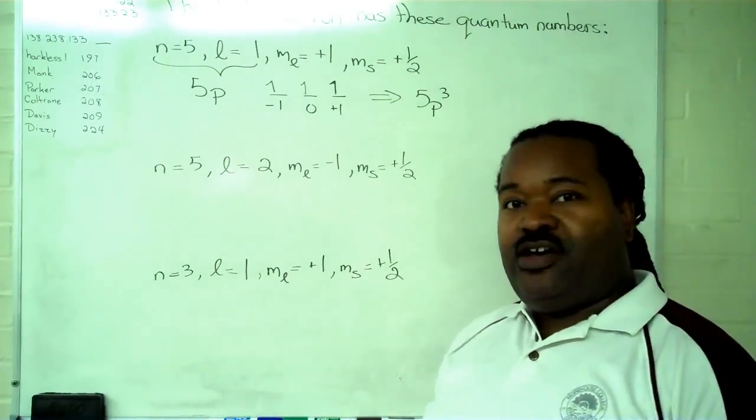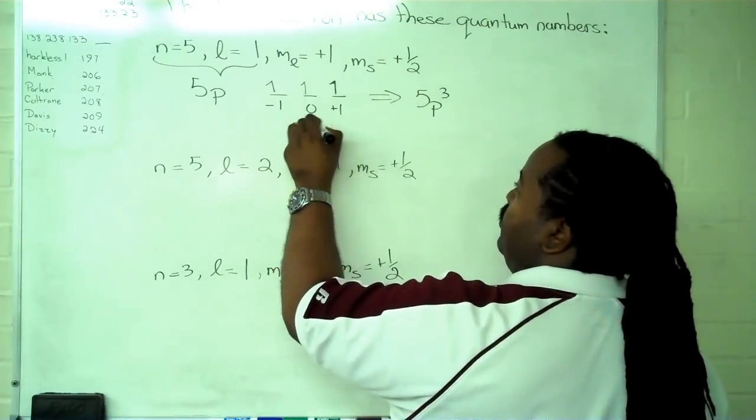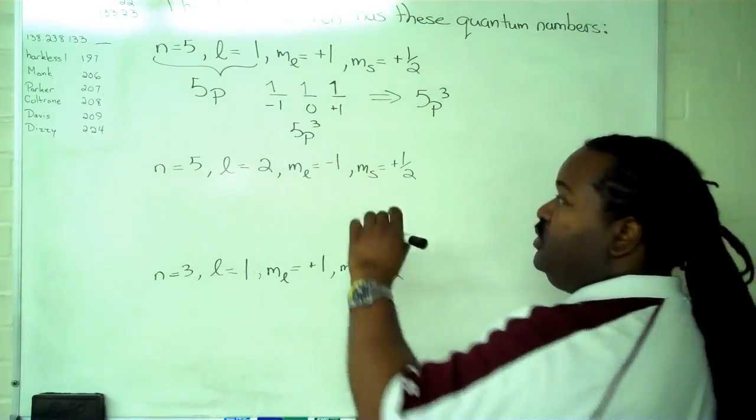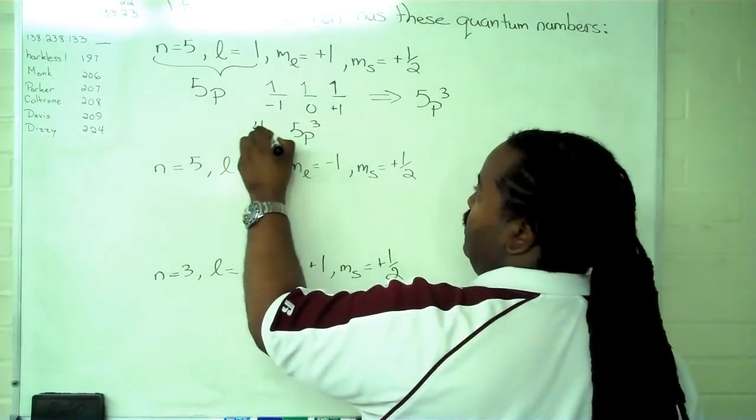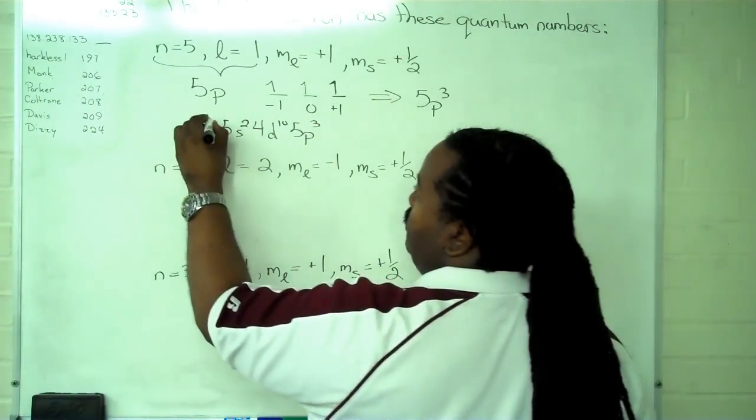So this tells us then that what we have is 5p3. Now we can use the Aufbau principle to determine what has to precede it. So if we have 5p3, then the thing we know that comes before that is 4d. That must be completely full. Before 4d we have 5s, and that's completely full.